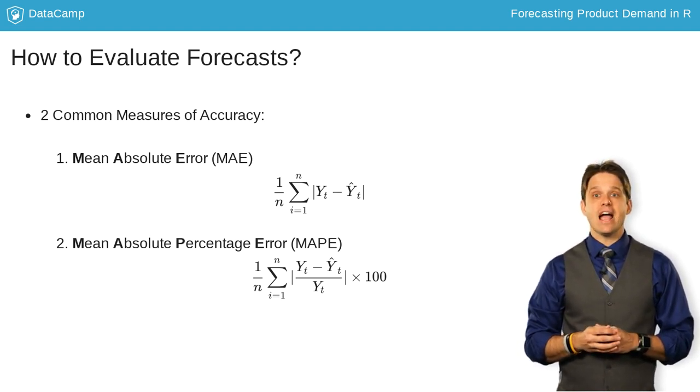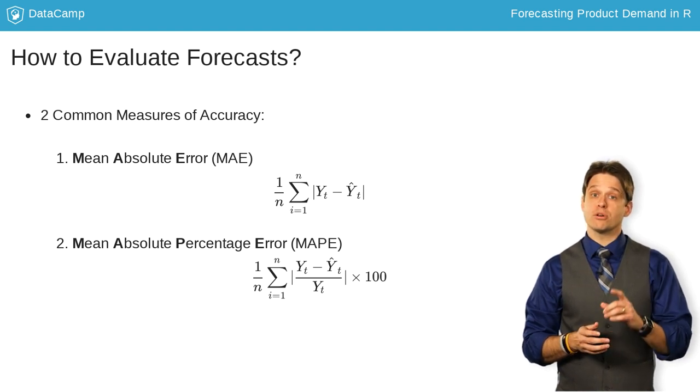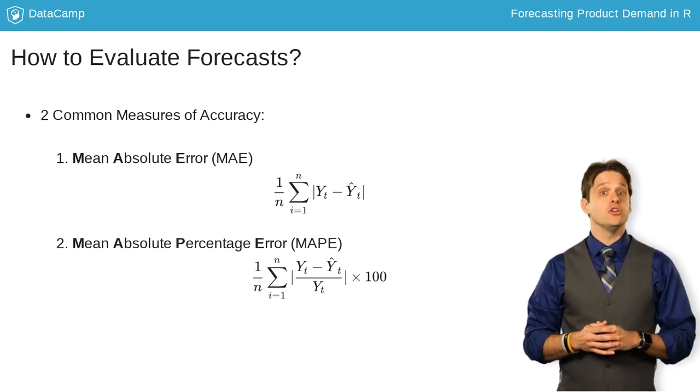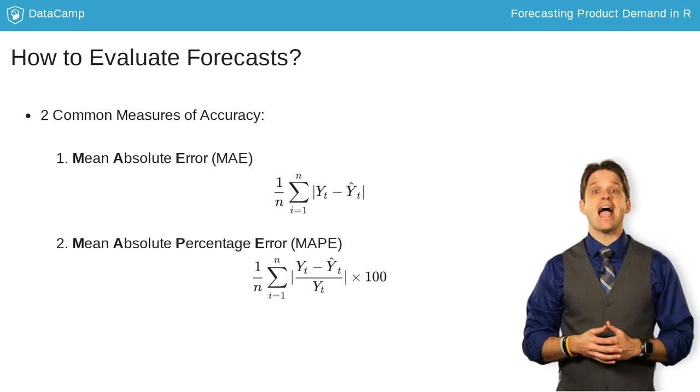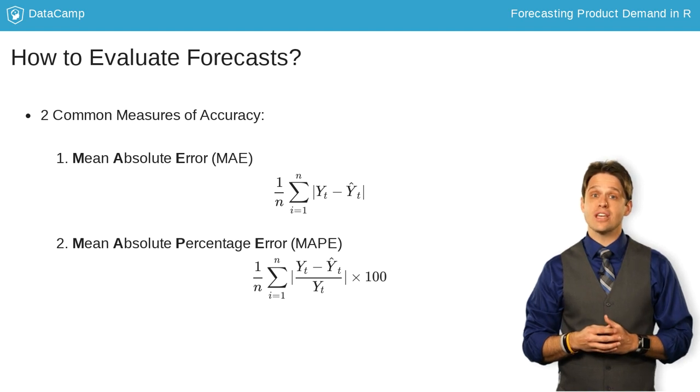The MAPE is the average measure of how far away, in absolute percentage terms, your prediction is from the actual value. This makes your prediction not dependent on scale.